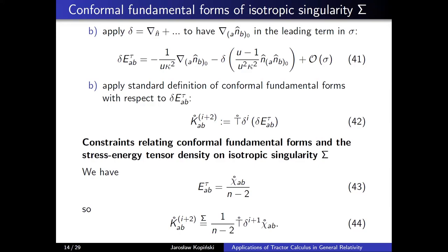We see that the (i+2)-th conformal fundamental form of the boundary equals 1/(n−2) times the operator applied to the stress-energy tensor density. An explicit example of constraint 44 for specific values of i is not yet available as this part is still in progress, but we expect to obtain constraints relating the trace-free part of extrinsic curvature, projected parts of the Weyl tensor with two normal vectors, possibly divergences of the projected Cotton tensor, and the Bach tensor.